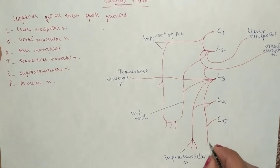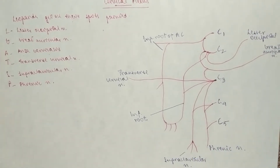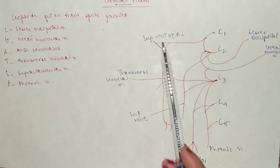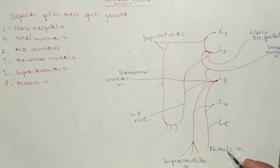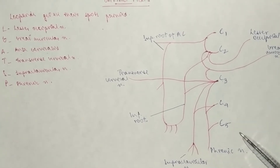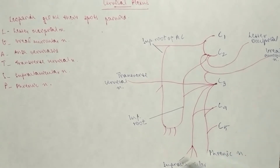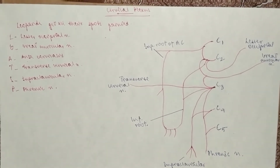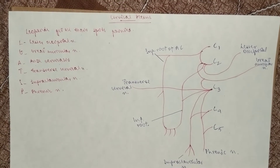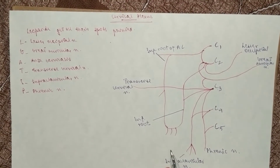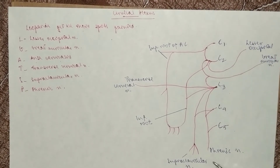And this one would be the phrenic nerve. For the phrenic nerve you can say it comes from C3, 4, and 5. For the great auricular, C2 and C3. This is how you'll need to mention it in your exams — write the name of the nerve and from which cervical spinal cord level it comes from.